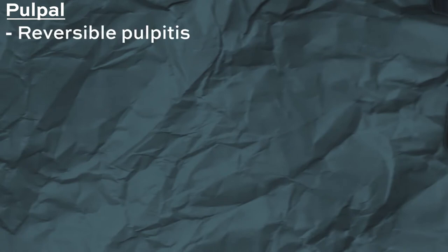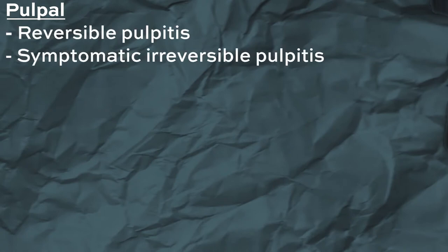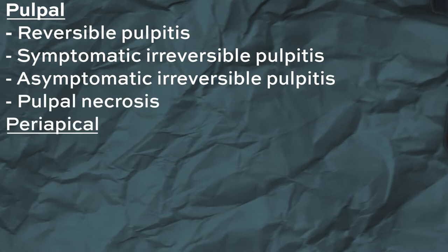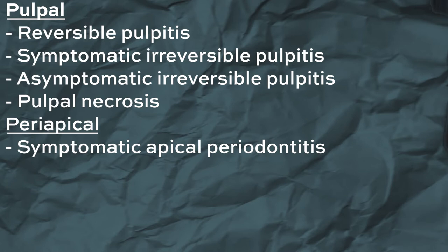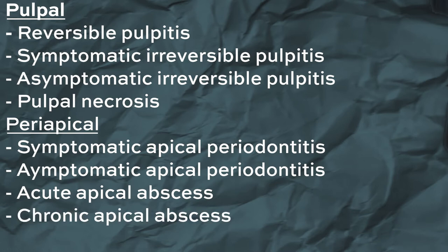So now we've covered all the pulpal diagnoses, which are reversible pulpitis, symptomatic irreversible pulpitis, asymptomatic irreversible pulpitis, pulpal necrosis, and the periapical diagnoses, which are symptomatic apical periodontitis, asymptomatic apical periodontitis, acute apical abscess, chronic apical abscess and condensing osteitis.